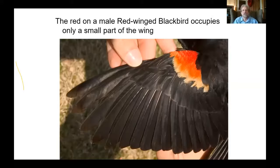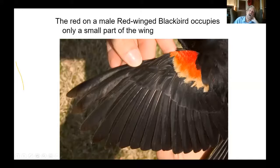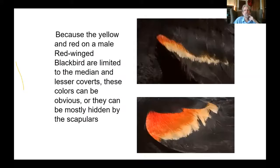The red-winged blackbird is one of our great marsh birds. Even though it's called red-winged blackbird, the red is just a small part of the wing — just up on feathers we call the lesser coverts. The median coverts are yellow, the greater coverts are black, and the rest of the wing is black. The conspicuousness of that red changes a lot depending on what position the bird is in.